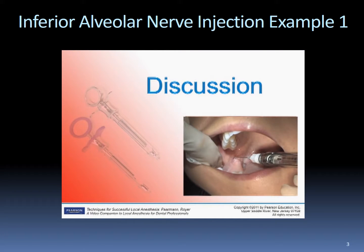Complications: Trismus is not an uncommon complication with this injection. Other possible complications include hematoma or facial nerve paralysis if the needle is directed too far posteriorly and bone has not been contacted.